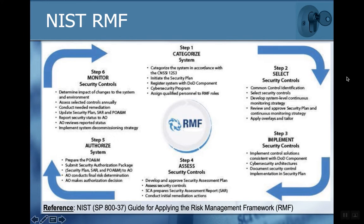You're categorizing, identifying and selecting controls, implementing those controls, doing the assessment of those controls, authorization and monitoring. Think about this as an ongoing circle — a process where you identify what the risks are, identify the appropriate controls, implement them, assess them, and then authorize, deploy, monitor, and repeat.